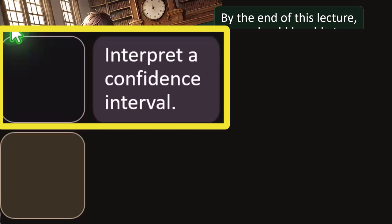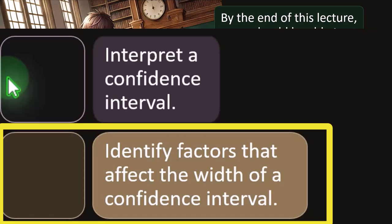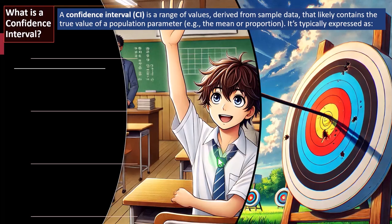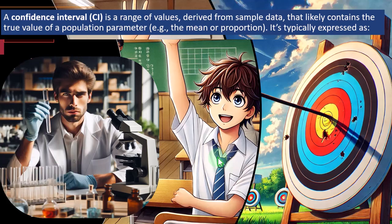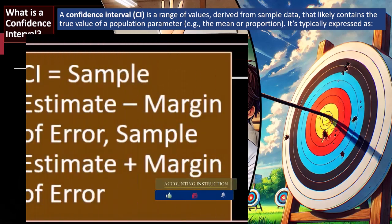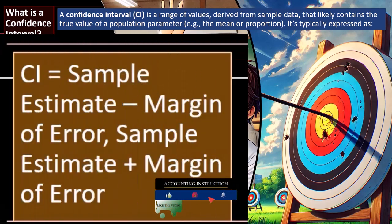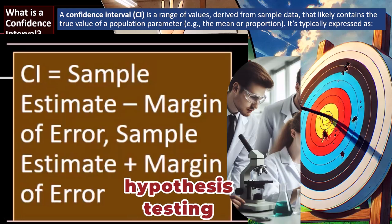We'll also interpret a confidence interval and identify factors that affect its width. First question: what is a confidence interval? A confidence interval, abbreviated as CI, is a range of values derived from sample data that likely contains the true value of a population parameter — such as the mean or proportion. It's expressed as CI equals the sample estimate minus the margin of error on one side, and the sample estimate plus the margin of error on the other.